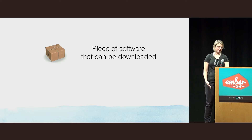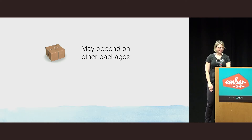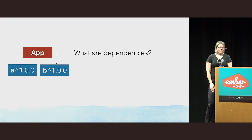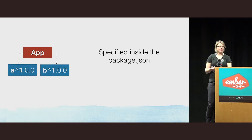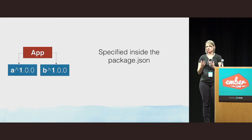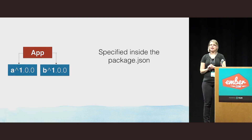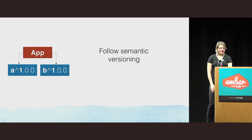What are packages? Packages are just pieces of software that can be downloaded. And packages may depend on other packages. What are dependencies? In our example app with two dependencies A and B, they are specified inside a manifest file — in NPM and Yarn's case, the package.json — and they follow semantic versioning.